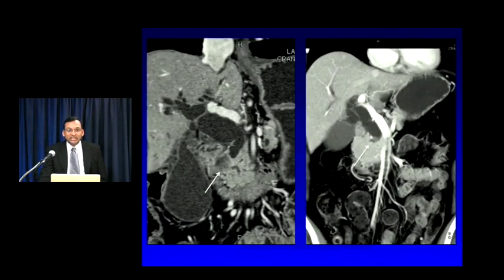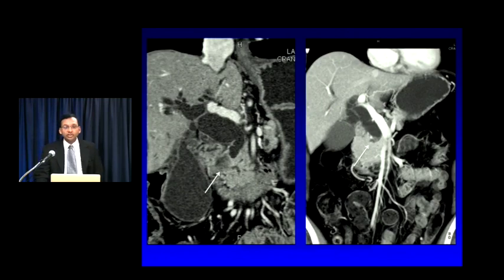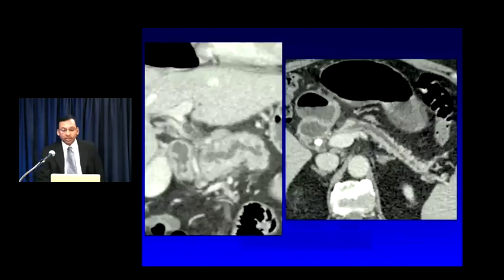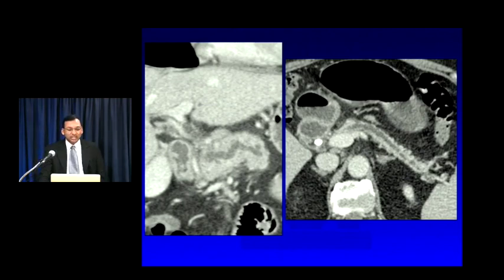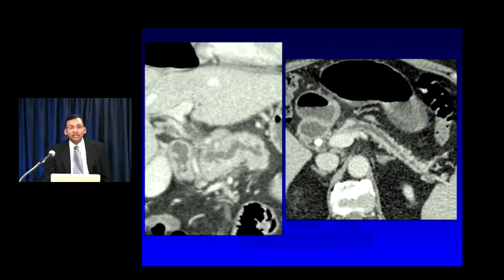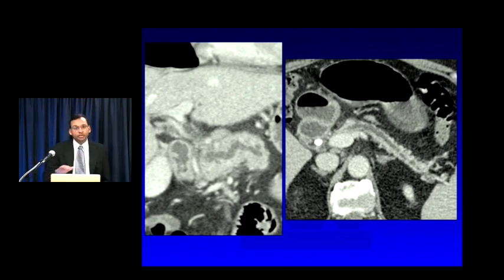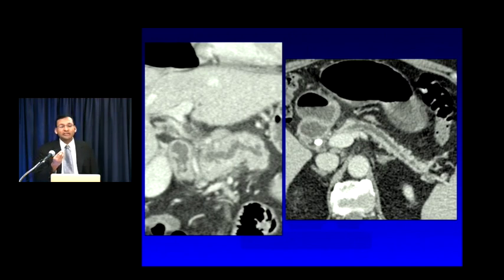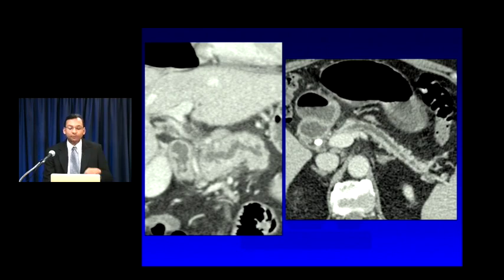Here's a classic example — a hypodense mass with abrupt cutoff of the distal common bile duct. Even if you didn't see the mass, the duct morphology should raise concern for an occult neoplasm. Here's another case where no primary pancreatic mass is visible, but the pancreatic duct is dilated with abrupt cutoff at the pancreatic neck. That patient needed endoscopic ultrasound and was found to have a sub-centimeter adenocarcinoma. Never let a dilated pancreatic duct go — that must be further interrogated.